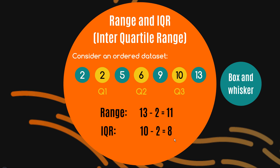So instead of being the maximum minus the minimum, the IQR is going to be quartile three, which is 10, minus quartile one, which is 2, giving us an interquartile range of 8. If you're wondering why these are exactly quartile one and quartile three, head back and look at how we calculate quartiles. For the sake of this video, we're just interested in why we bother with interquartile ranges when we've already got the range to measure spread.